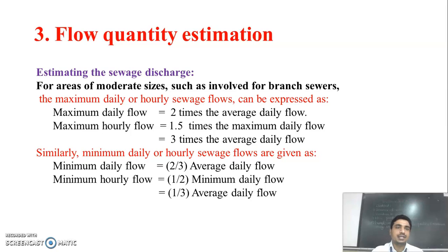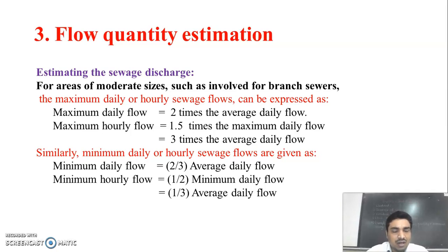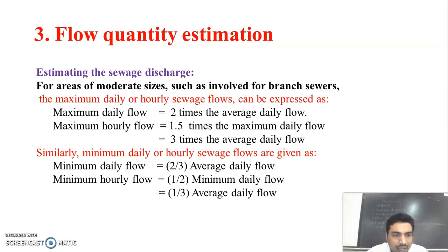For estimating the sewage flow, for areas of moderate size such as branch sewers, the maximum daily or hourly sewage flow can be calculated using these equations. Maximum daily flow = 2 times the average daily flow. Maximum hourly flow = 1.5 times the maximum daily flow, or 3 times the average daily flow. Minimum daily flow = 1.5 times the average daily flow. Minimum hourly flow = 1.5 times the minimum daily flow, or 1.3 times the average daily flow.